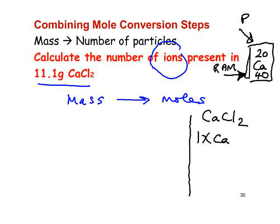The relative atomic mass is quite often incorrectly stated as being the atomic mass. The atomic mass is the mass of a particular atom of an element. The relative atomic mass is the average mass of an atom of an element compared to one twelfth the mass of a C-12 carbon atom.